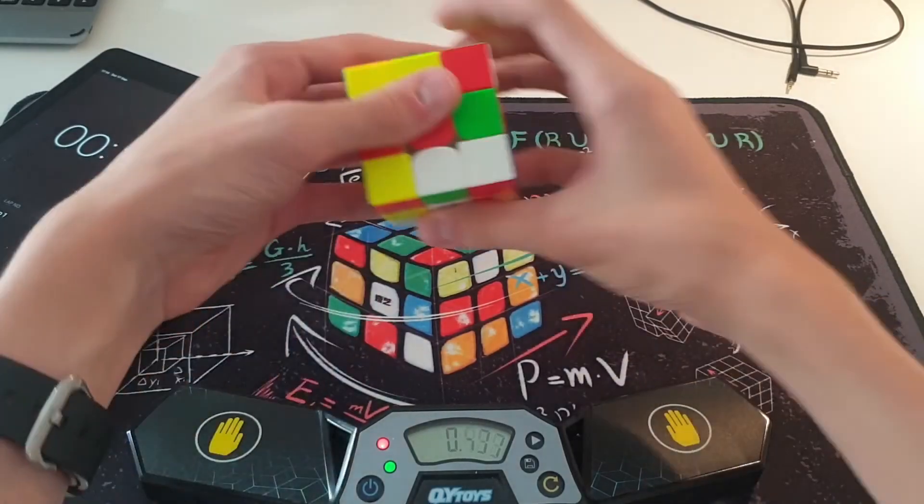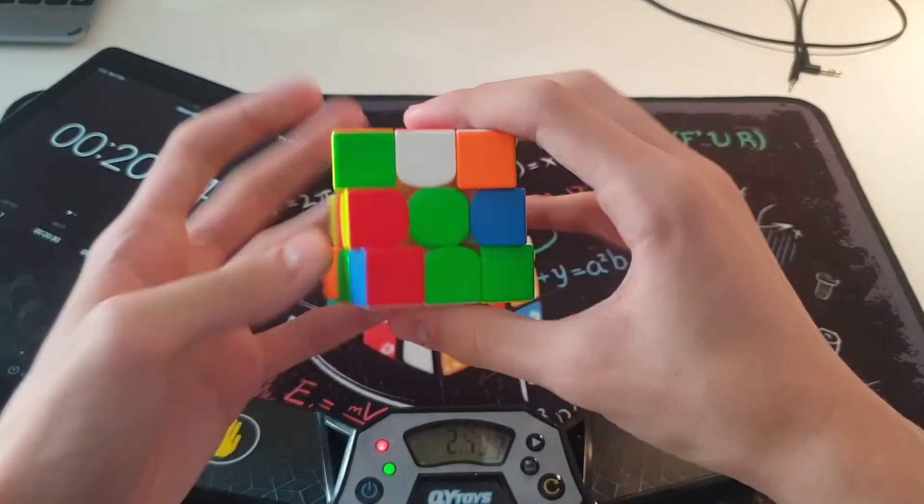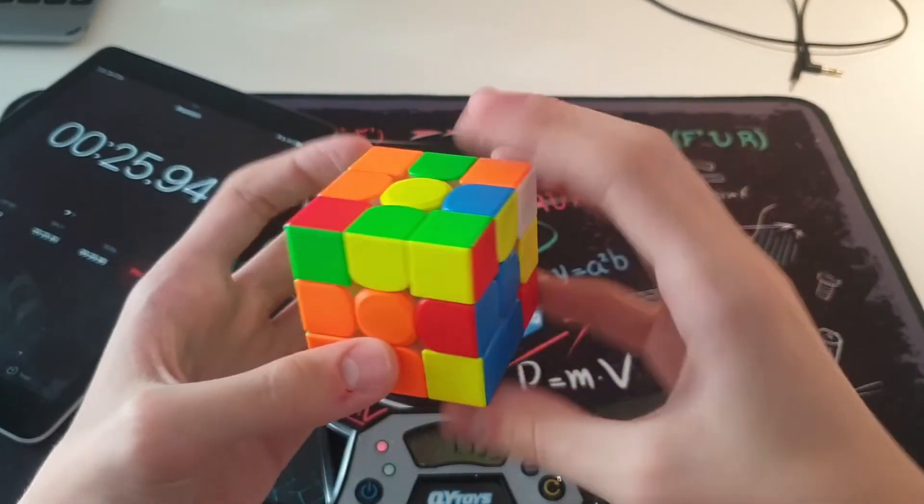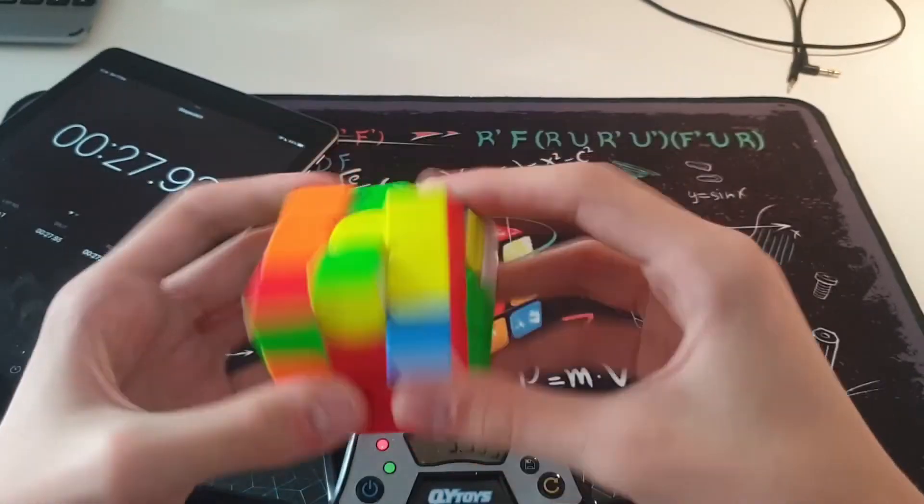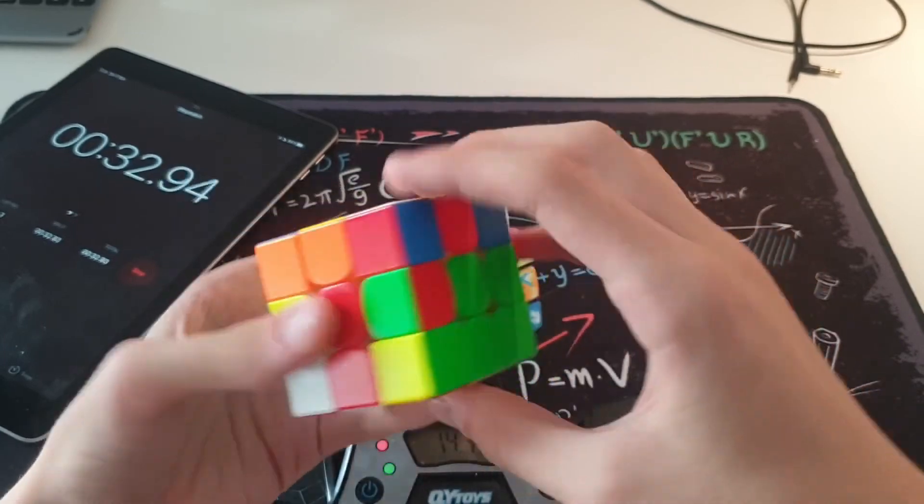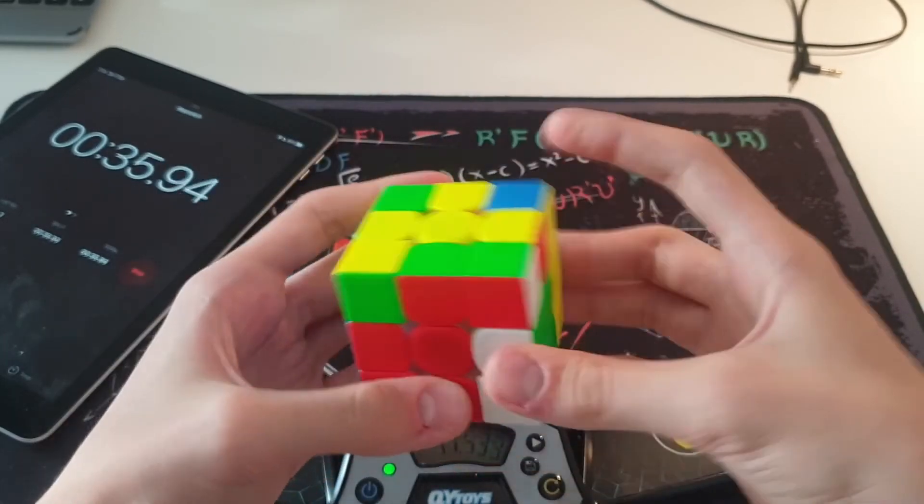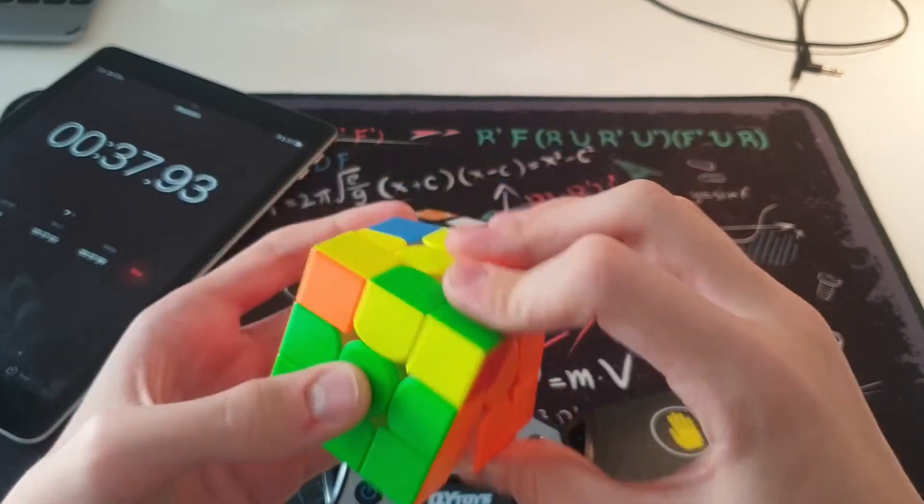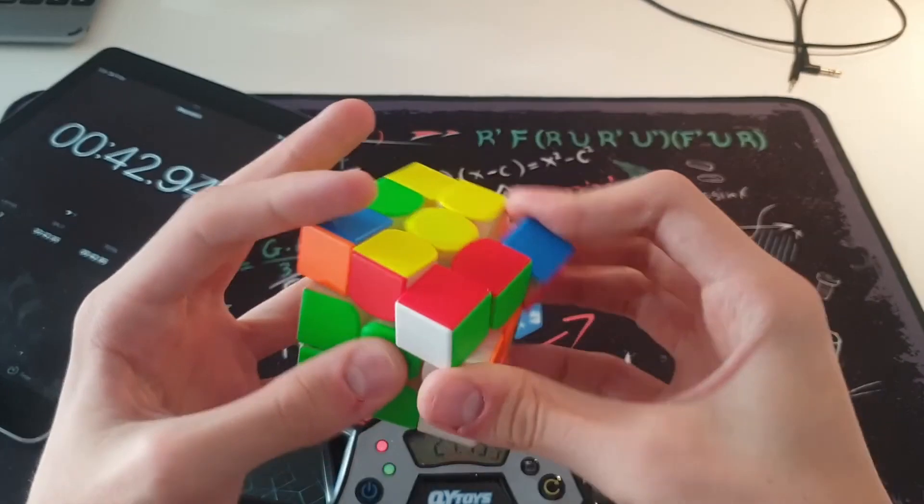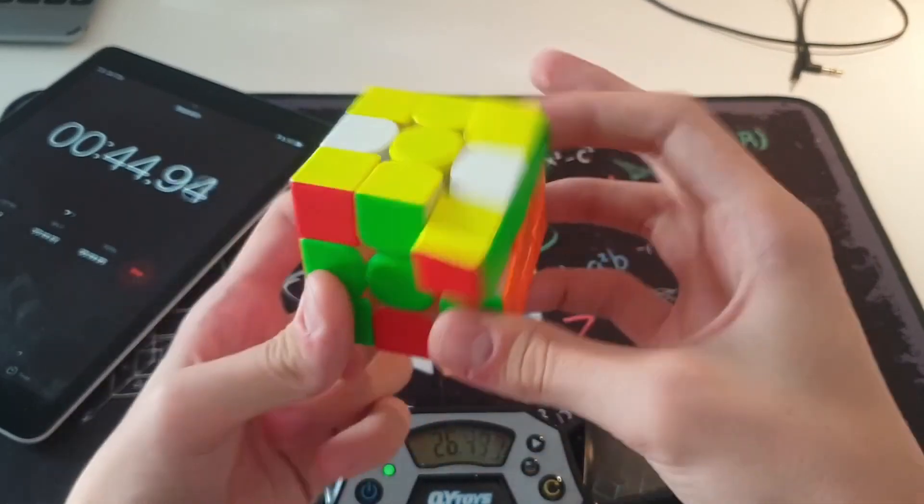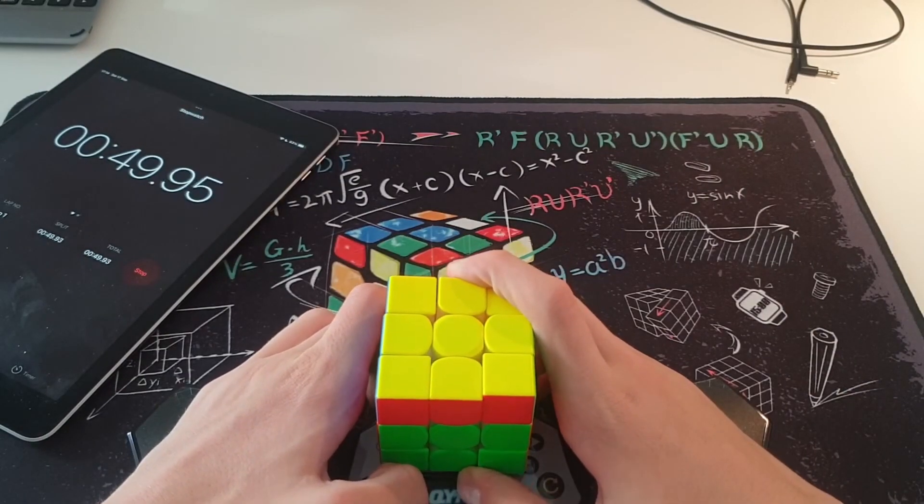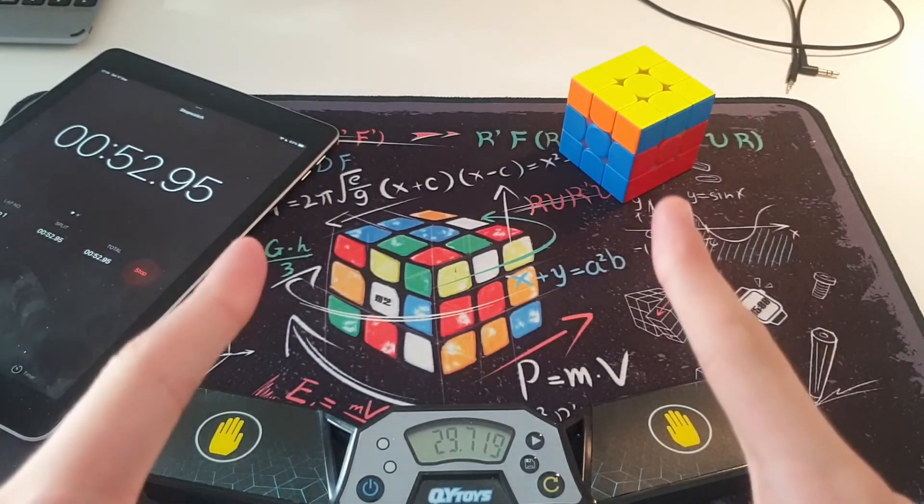Now we can start solving. I'm going to leave that timer running because I can't be bothered to turn it off. This is actually turning out to be a really bad solve. And that's how you get a plus 16.